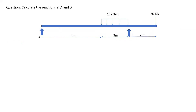For this question, we need to calculate the reactions at A and B. We have a point load of 20 kilonewtons acting downwards at the end of the beam, and a uniformly distributed load of 15 kilonewtons per meter acting over only three meters of the beam. We have reactions at B and at A, and these are what we need to calculate.